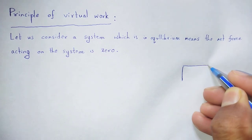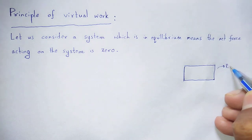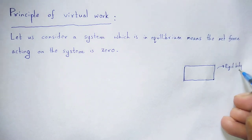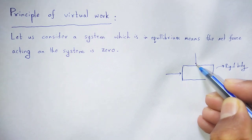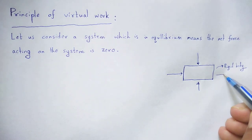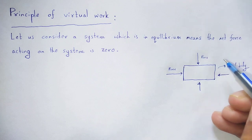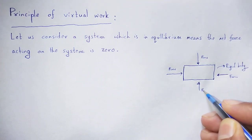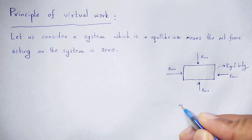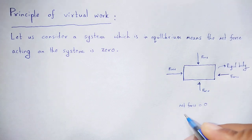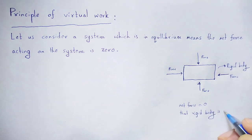Consider a rigid body. We say the net force on that rigid body is zero. Then that rigid body is said to be in equilibrium — net force is equal to zero, and that rigid body is in equilibrium.